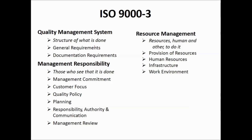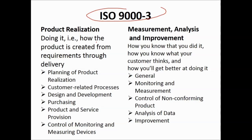The structure of ISO 9003 covers general requirements, document requirements, and management responsibility — that is, what is done. This includes management commitment, customer focus, quality policy, planning, responsibility, authority, communication, and management review.